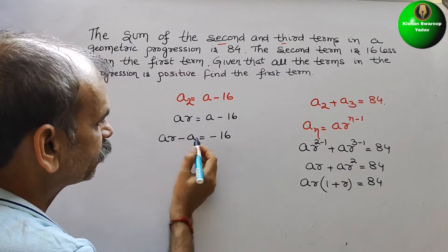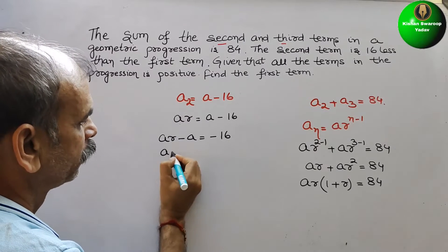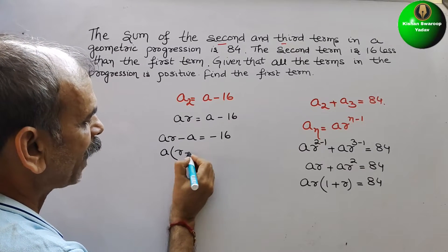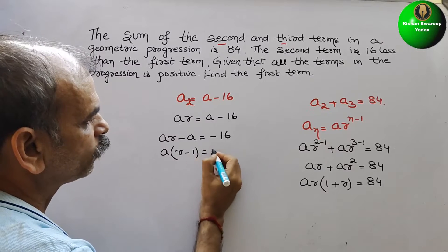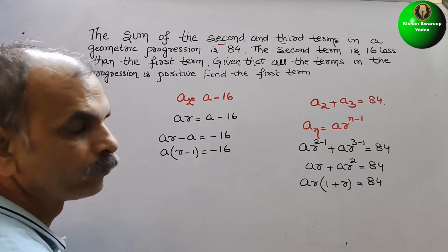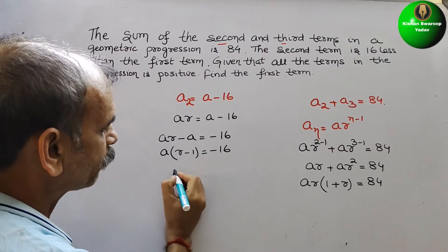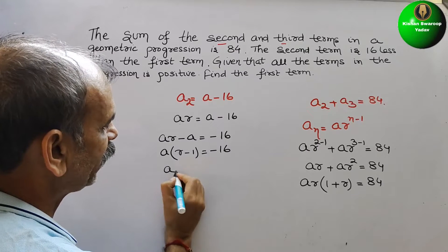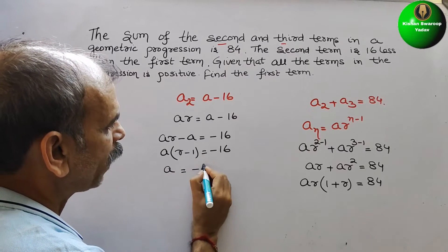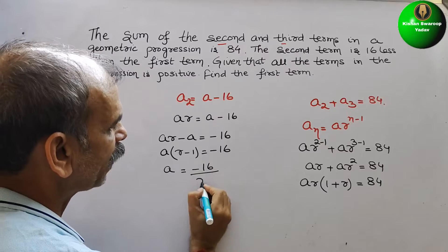Here a is common. That we will take it. So here a times r minus 1 is equal to minus 16. So what is your r minus 1? Or you can say a is equal to minus 16 by r minus 1.